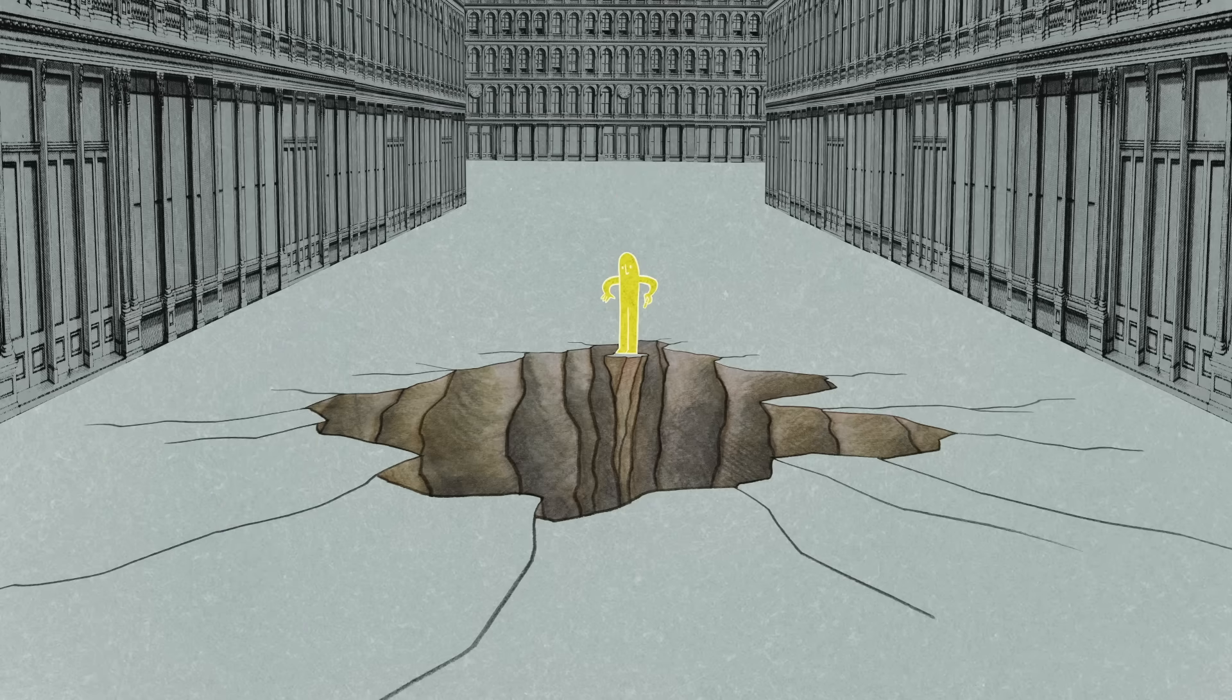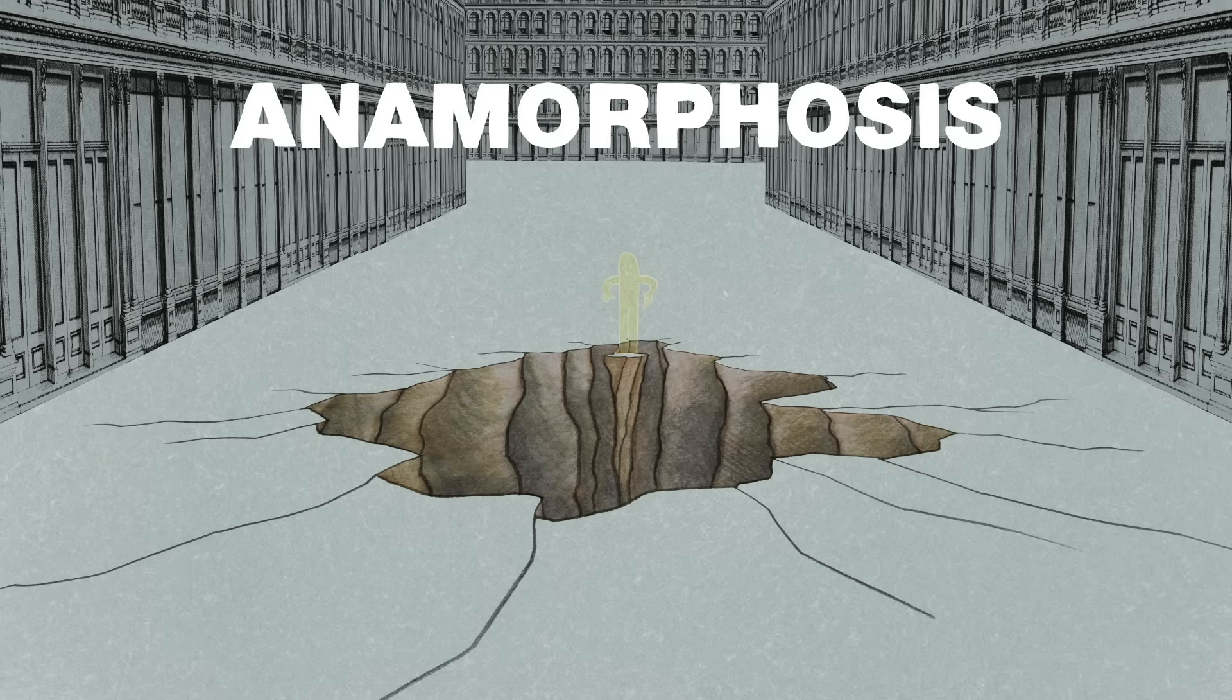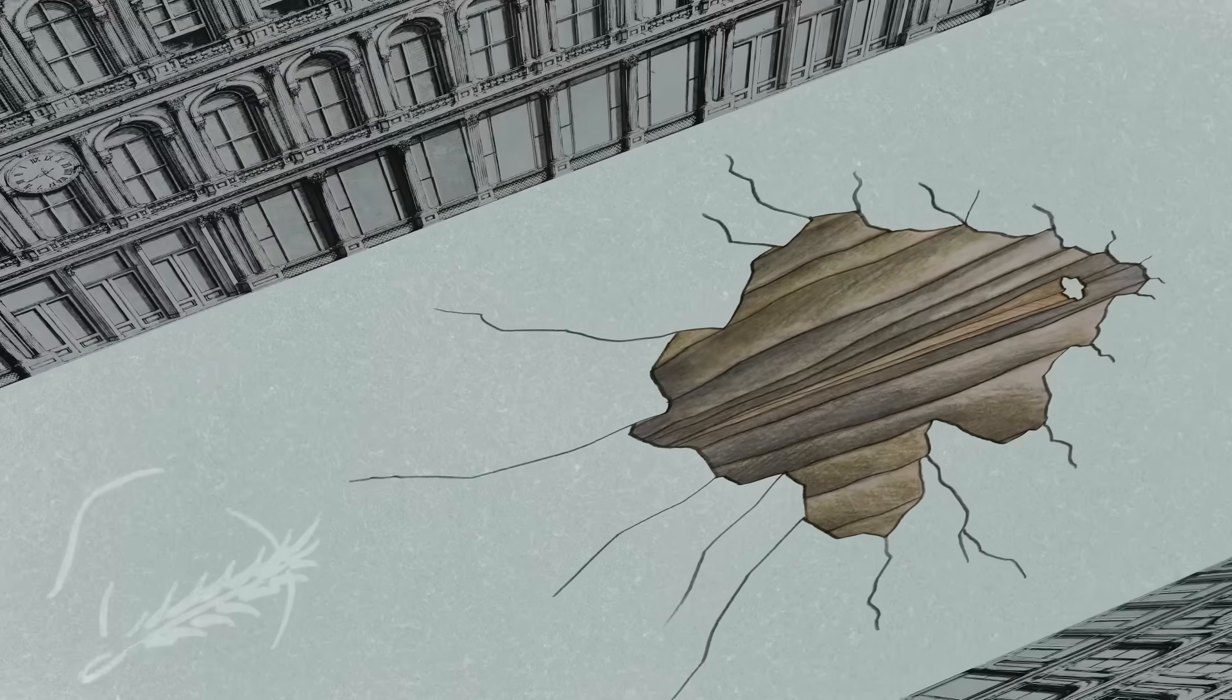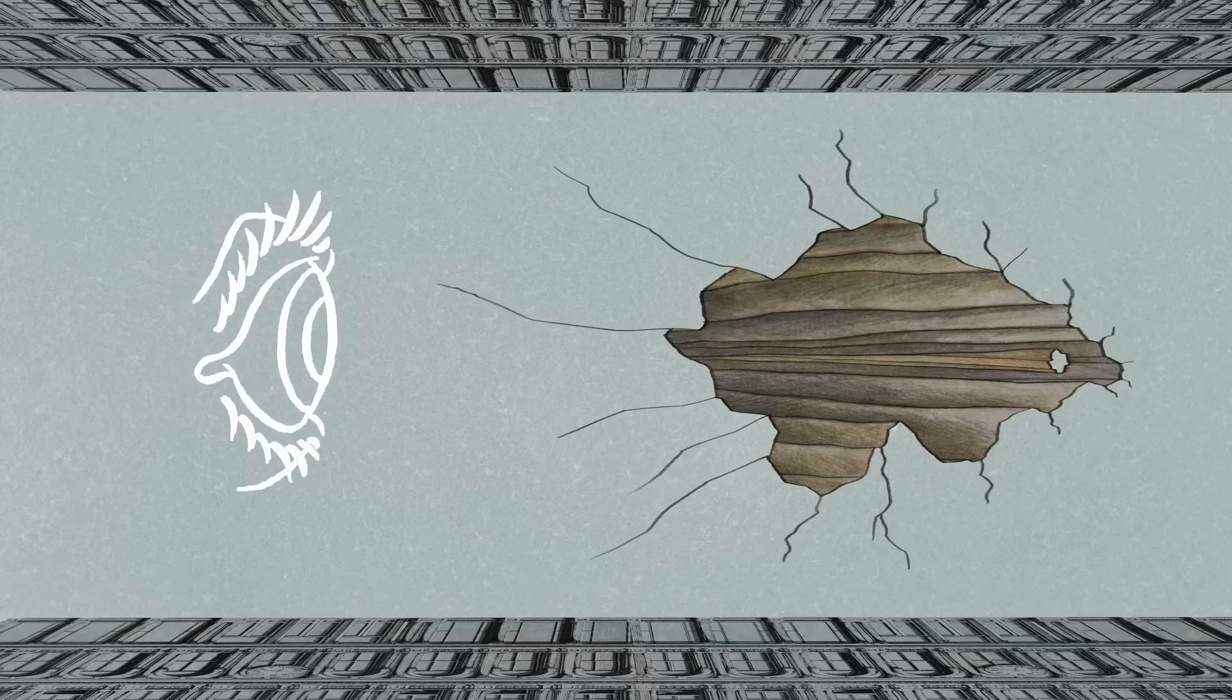That happens because these works employ a technique called anamorphosis. Anamorphosis is a special case of perspective art where artists represent realistic three-dimensional views on two-dimensional surfaces.